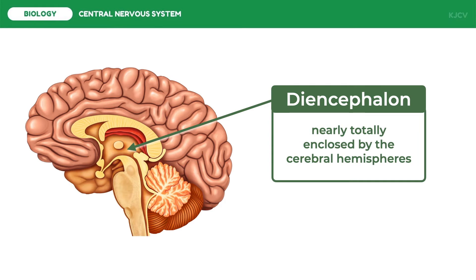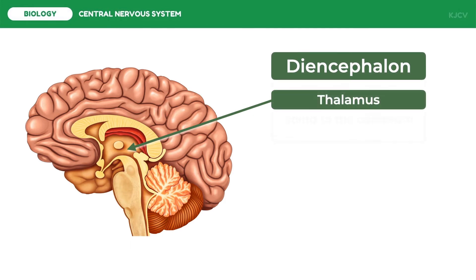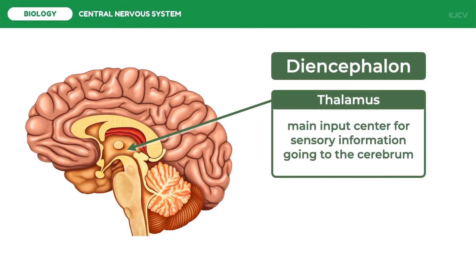Complex activities such as riding a bike require a lot of coordination and control of your muscles — the cerebellum coordinates your muscle movements so that you can maintain balance. The diencephalon is nearly totally enclosed by the cerebral hemispheres. Its first major part is the thalamus, which is the main input center for sensory information going to the cerebrum. Incoming information from all the senses is sorted in the thalamus and sent to the appropriate cerebral centers for further processing.